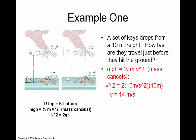Let's say the keys are dropped from a height of 10 meters and we want to know how fast they're traveling. Plugging into the formula, we get 2 times gravity 10 m/s² times the height 10 meters. Take the square root and we get a speed of 14 meters per second.